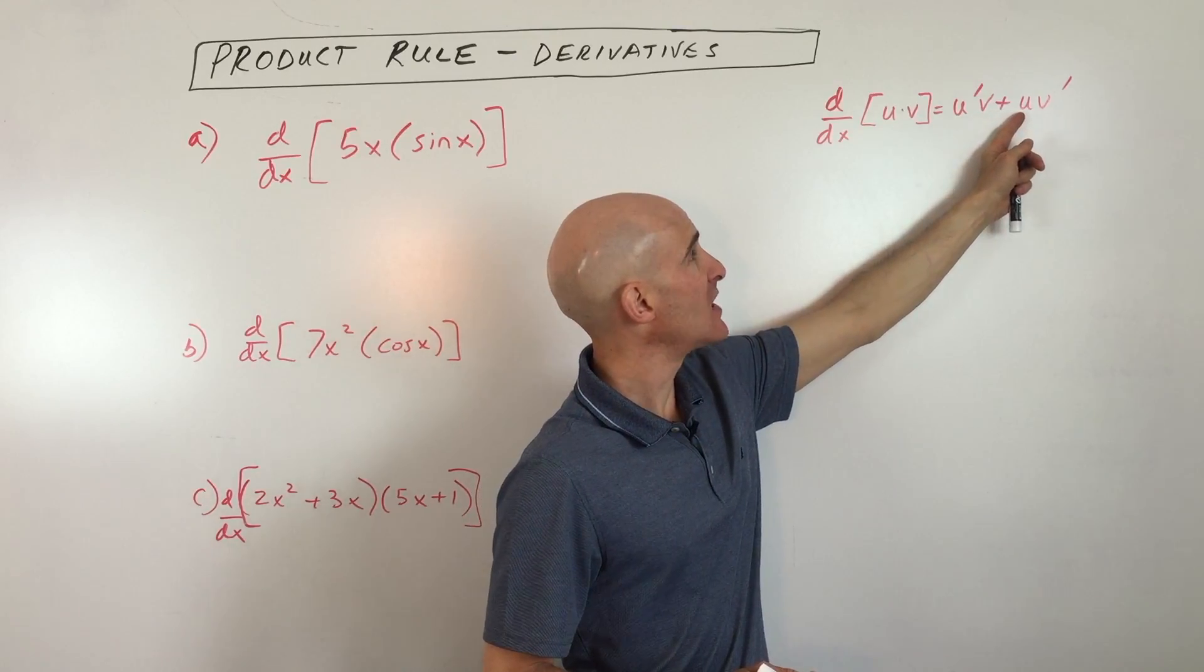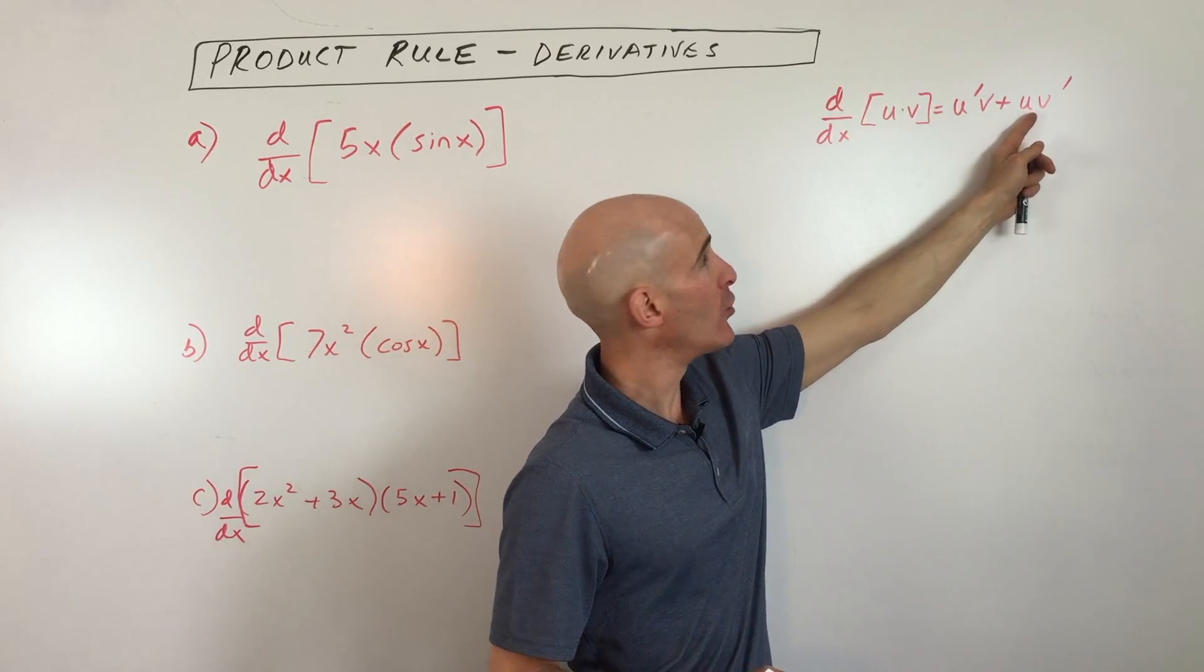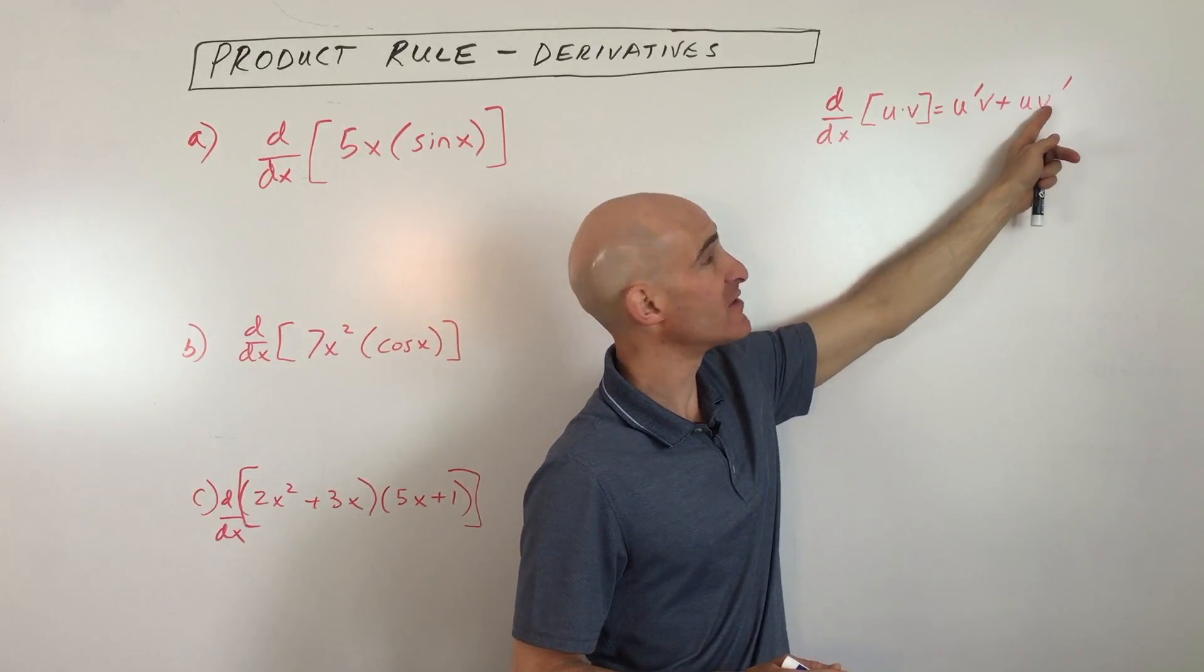Then we're adding, and then we're taking the first quantity, leaving that one alone, but multiplying it by the derivative of the second quantity.